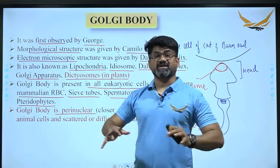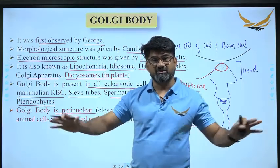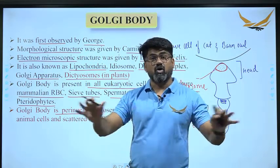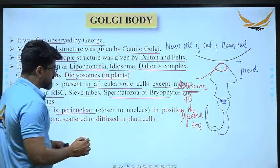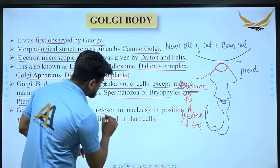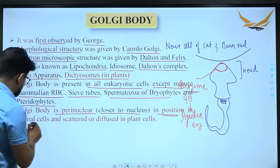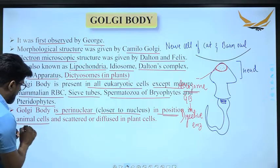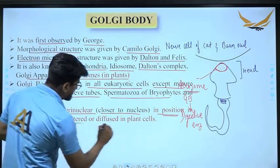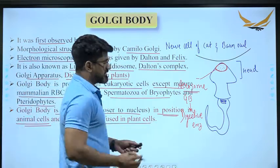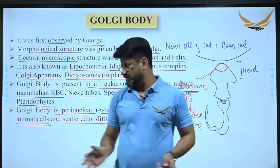In the case of plant cells, Golgi body is diffuse — it is scattered all around in the cytoplasmic part. In animal cells, Golgi body is perinuclear, meaning it is positioned closer to the nucleus. In plant cells, it is scattered and diffused.